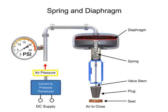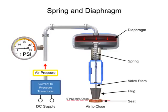For example, a pressure of 9 PSI applied to the diaphragm moves the spring and valve stem to 50% of operating range.